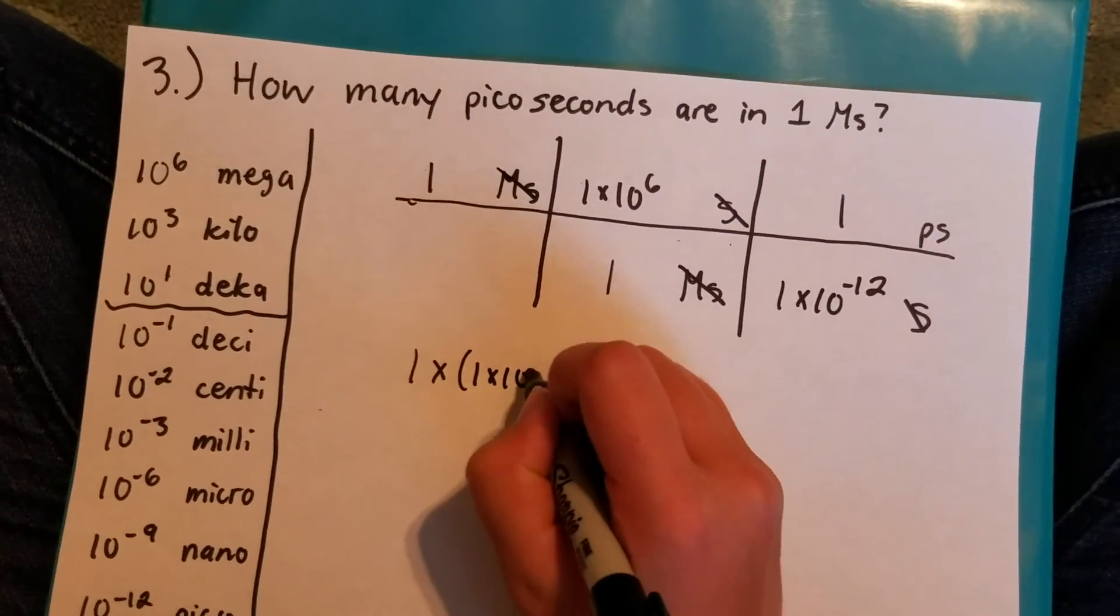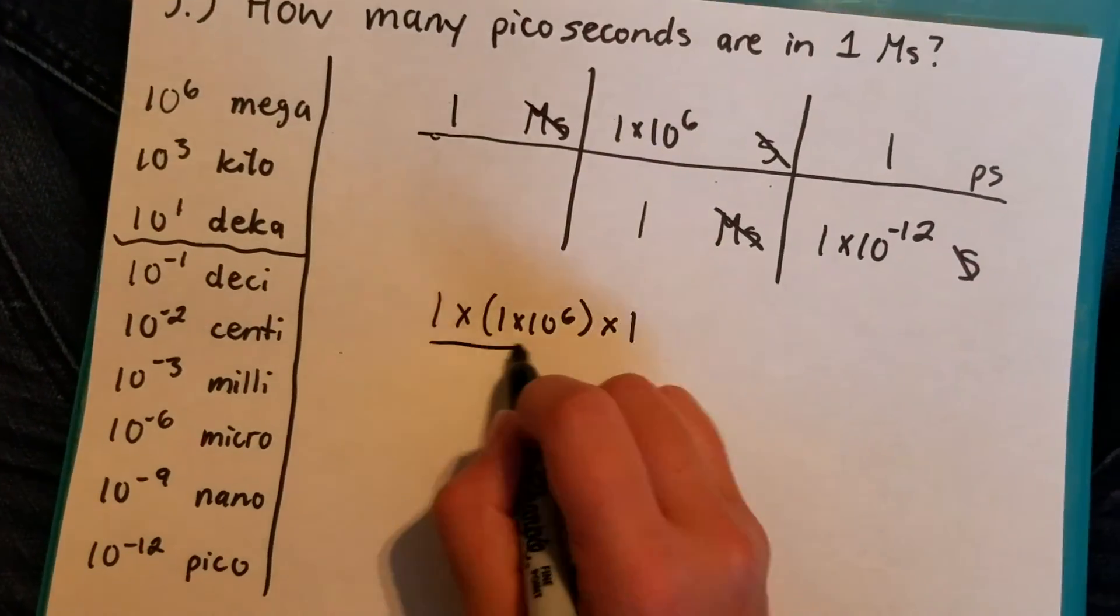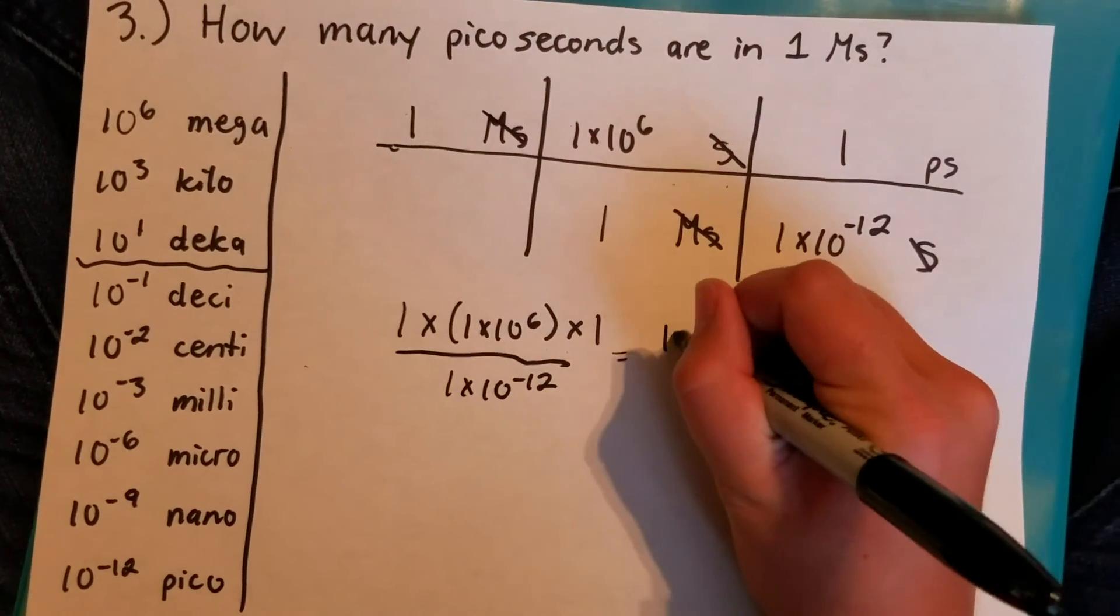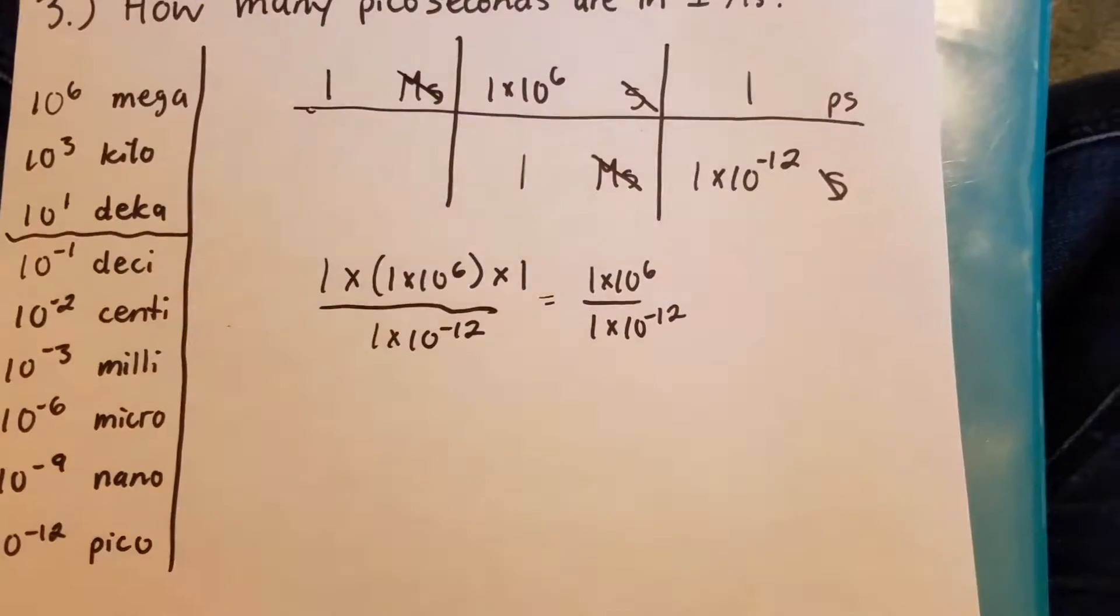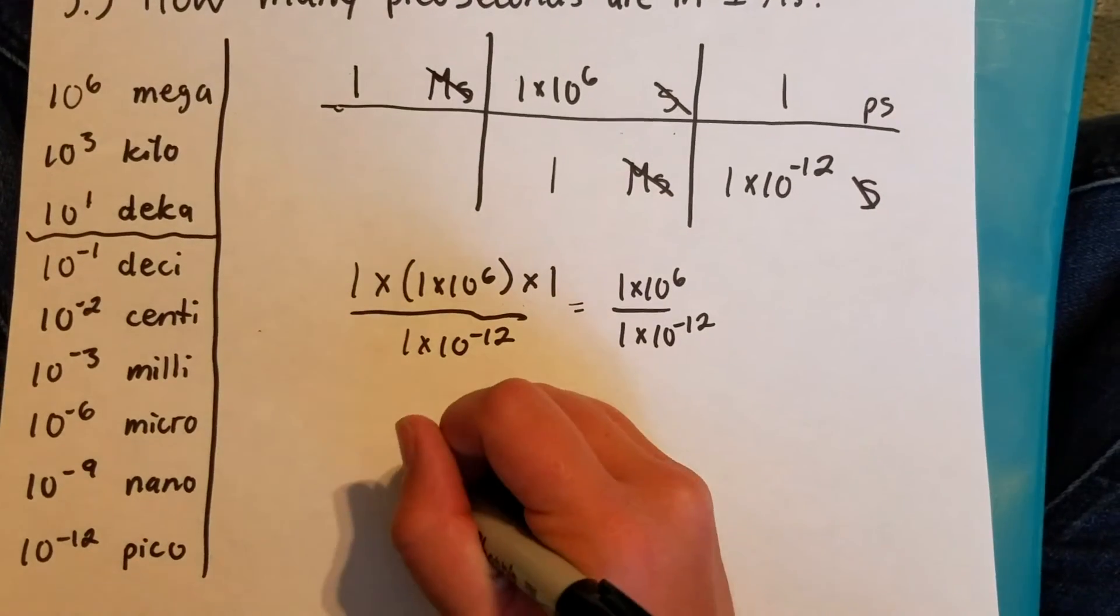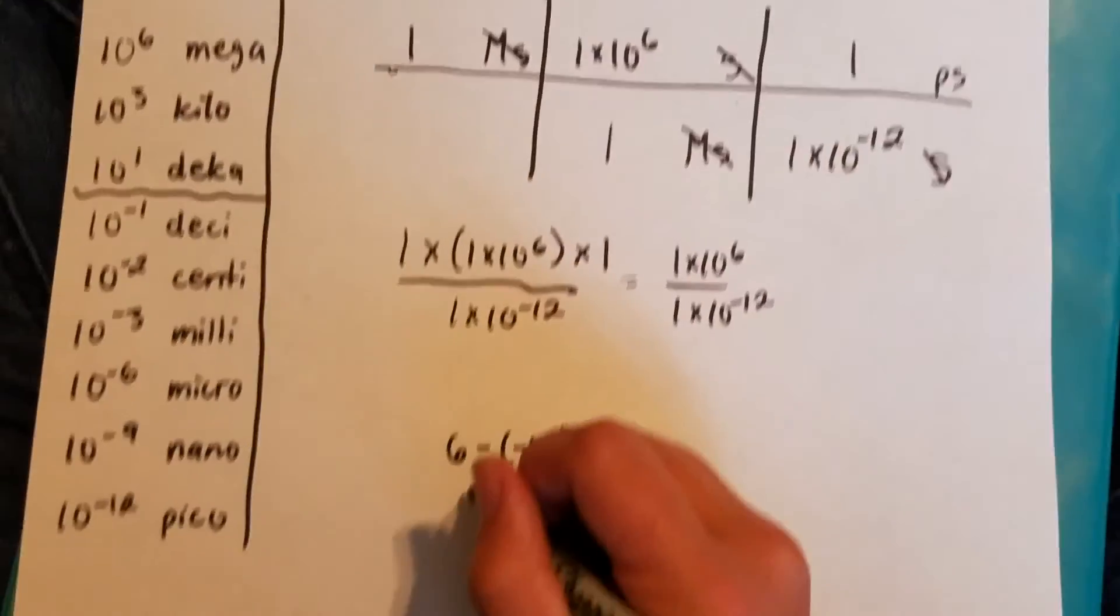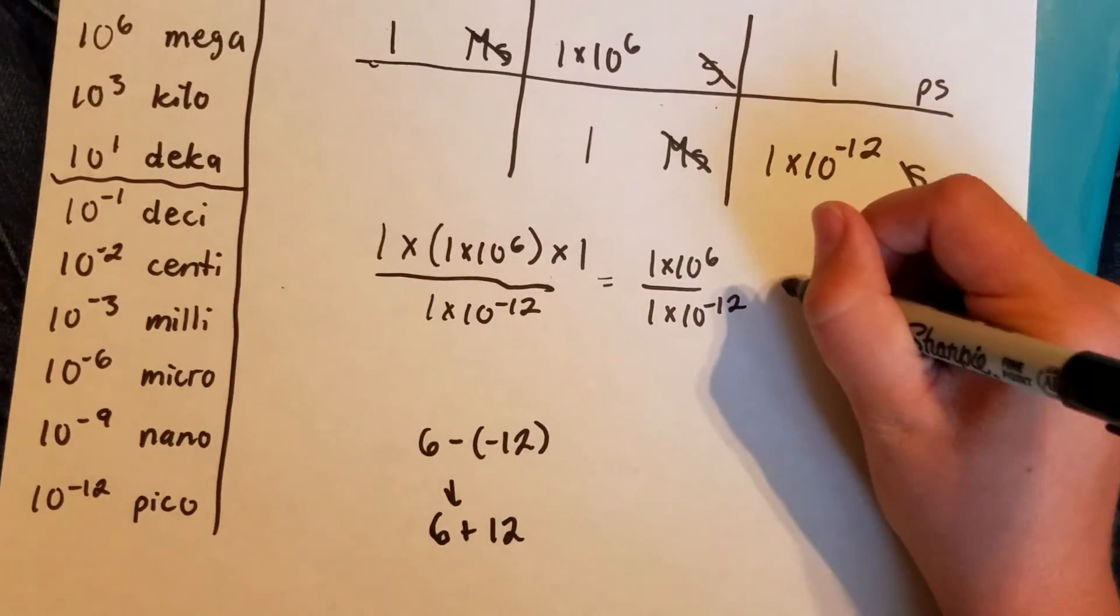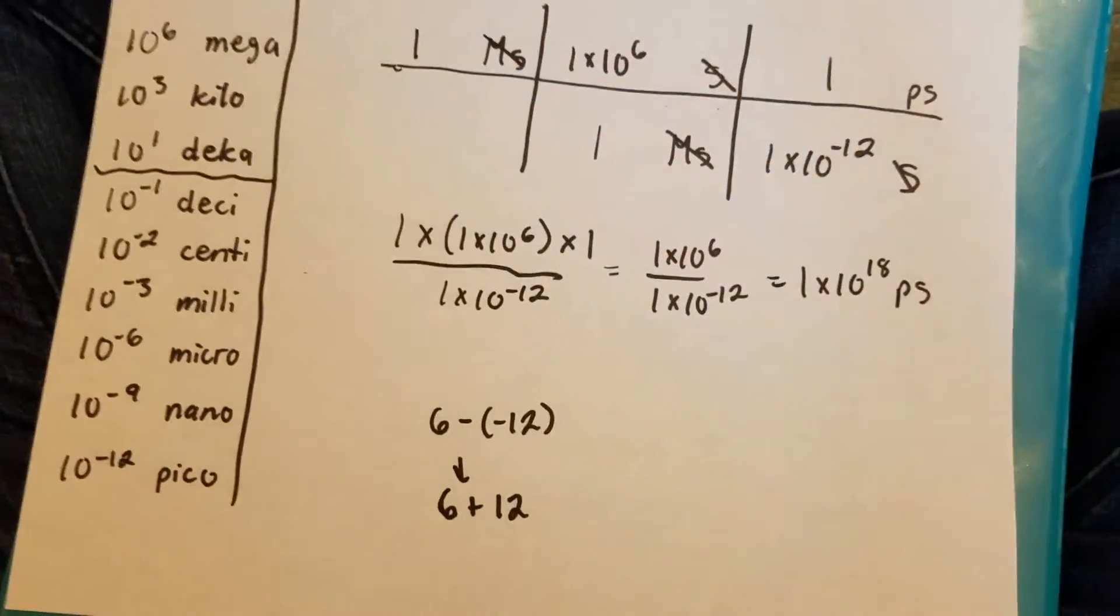1 times 1 times 10 to the 6 times 1 and divided by 1 times 10 to the negative 12. That is 1 times 10 to the 6 over 1 times 10 to the negative 12. And when you divide exponents you subtract the exponents. So it would be like doing 6 minus negative 12 which turns into 6 plus 12. So then your answer is 1 times 10 to the 18th picoseconds.